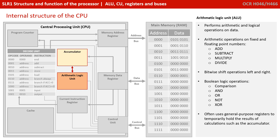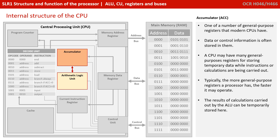The ALU often makes use of various general purpose registers to temporarily hold the results of calculations, and one of these is called the accumulator. Modern CPUs have many different general purpose registers for storing temporary data while instructions or calculations are being carried out by the processor. Typically, the more general purpose registers the processor has, the faster it will operate, because accessing, reading and writing information from registers inside the CPU is always much quicker than reading or writing from main memory. The results of calculations carried out by the ALU can temporarily be stored here for super quick retrieval.